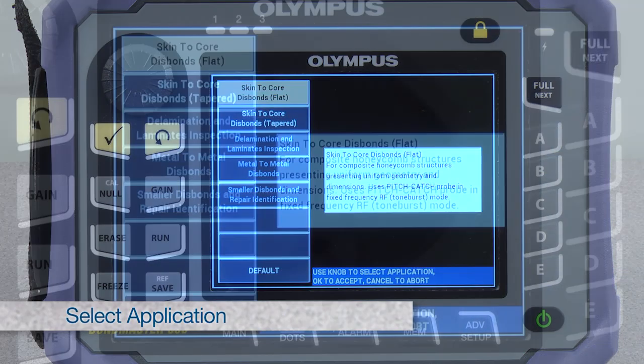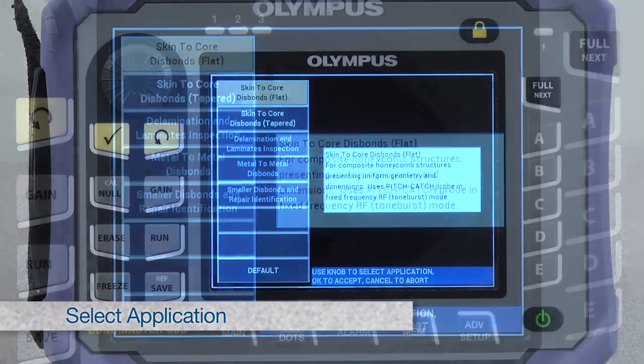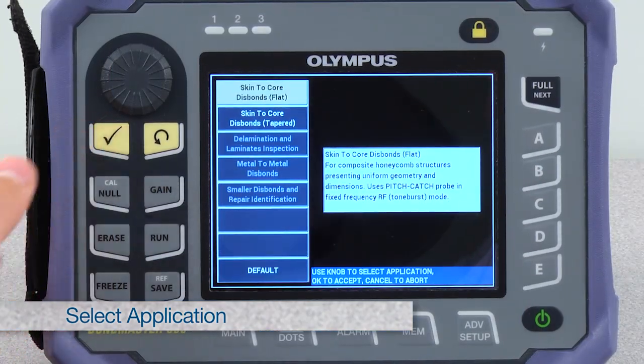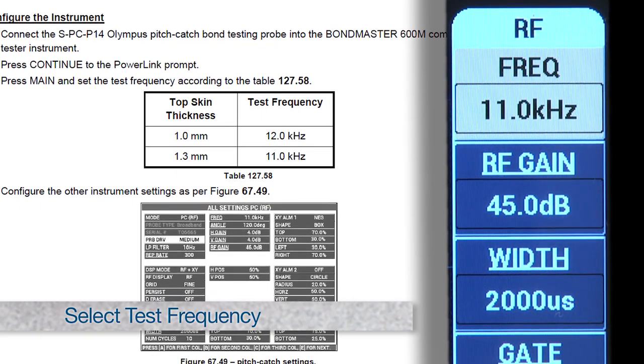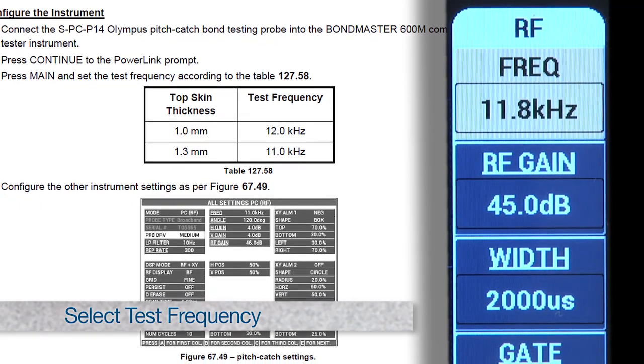Select the first application that is named skin-to-core disbonds flat. Select the proper test frequency as recommended by either the original part manufacturer or the inspection procedure.